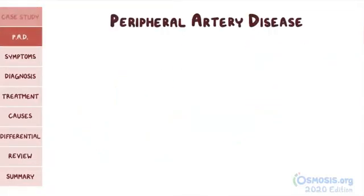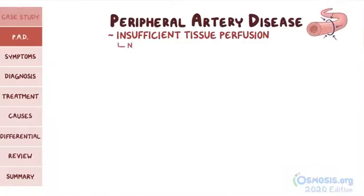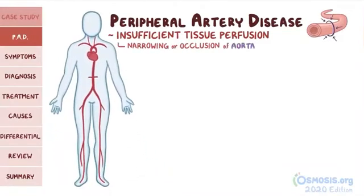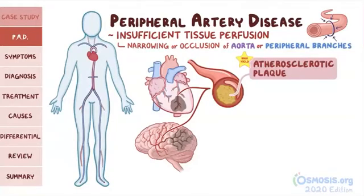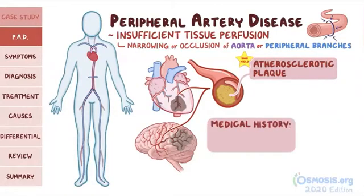Peripheral artery disease is insufficient tissue perfusion due to narrowing or occlusion of the aorta or one of its peripheral branches supplying the limbs. Similar to coronary artery and cerebrovascular disease, the development of an atherosclerotic plaque that narrows or completely occludes an artery is the number one cause of peripheral artery disease, and so these diseases often coexist together. On the exam, an important clue may be an individual with a past medical history of a myocardial infarction or a stroke.